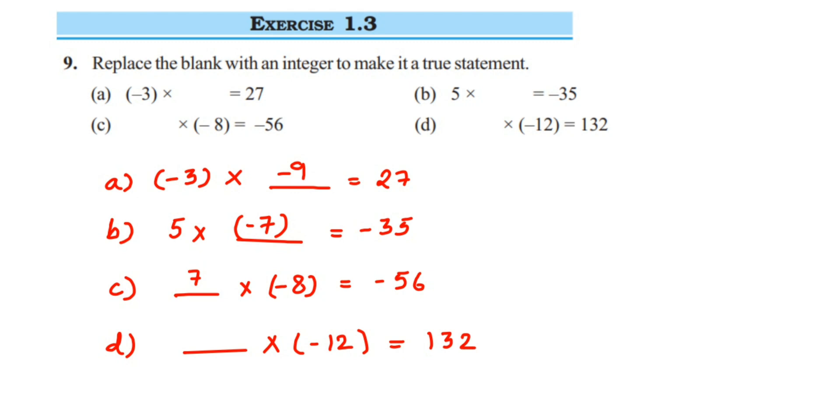So 11 times 12 is 132. But if you see, the final answer has a positive sign, and here we have minus with one negative sign. If you put another minus sign here for this 11, minus times minus will become plus, so we'll get +132. So it will be -11.